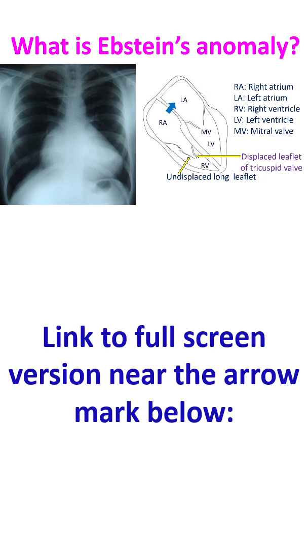In Ebstein's anomaly, two of the three leaflets of the tricuspid valve are displaced further into the right ventricle. Usually the anterior leaflet is not displaced while the septal and posterior tricuspid leaflets are displaced. So, a part of the right ventricle becomes part of the right atrium functionally and is called atrialized right ventricle.